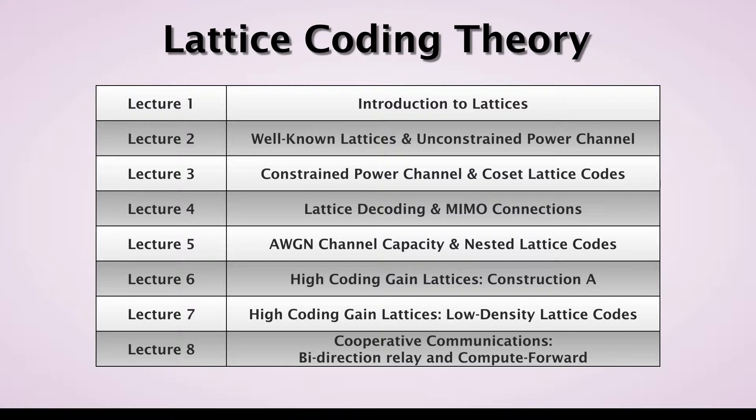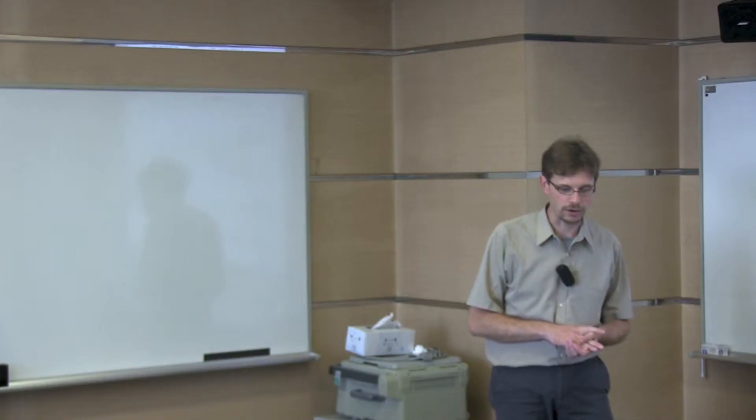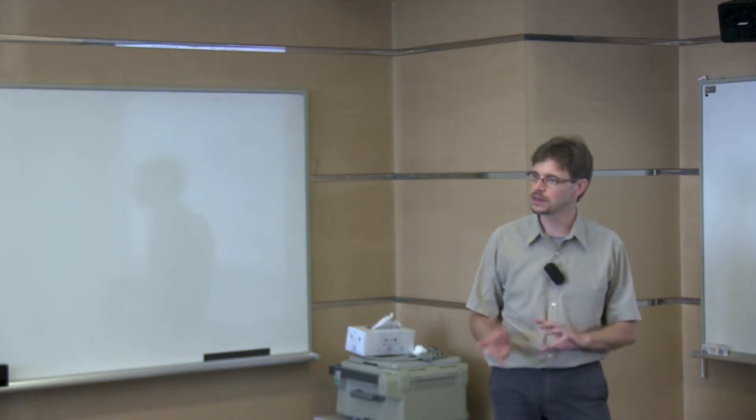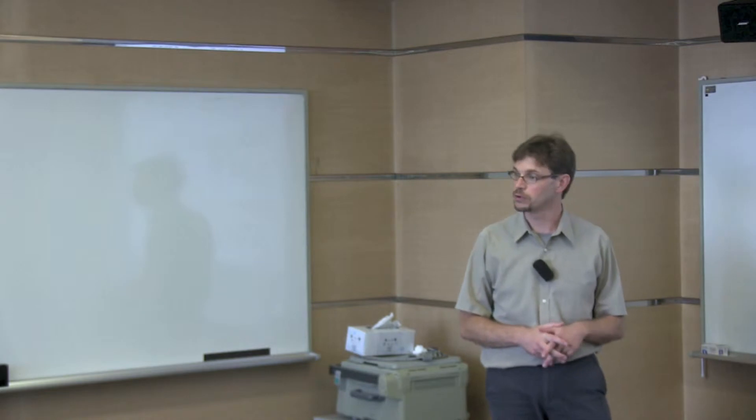Lecture five moved to the capacity of AWGN channels and how nested lattice codes can achieve that capacity. Lecture six and lecture seven are about two specific high coding gain lattices that approach the capacity of the unconstrained power channel. And then lecture eight talks about cooperative communications applying lattices to the bi-directional relay channel and compute and forward models.